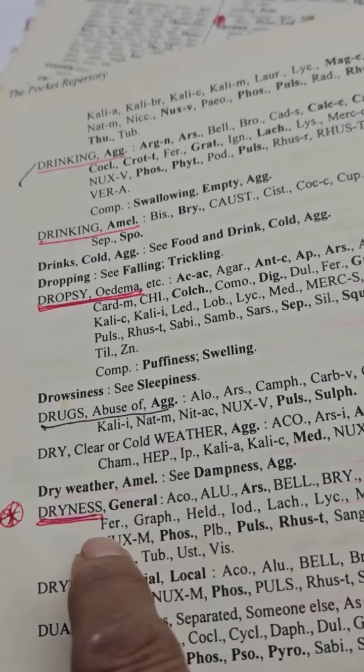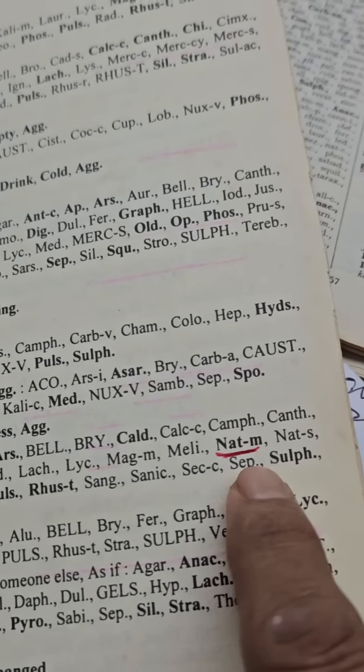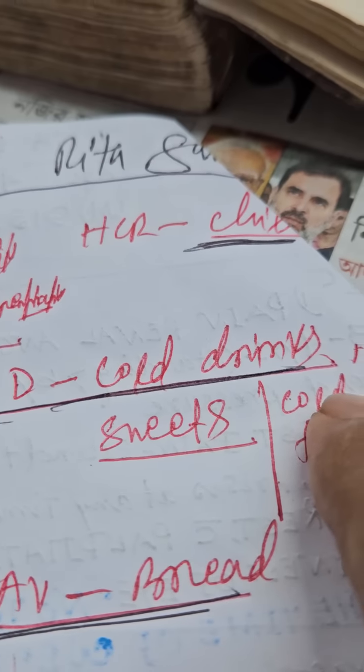In Dr. Shankaran's repertory, dryness in general — Natrum Mur is in the first grade. Number three: chilly patient. Natrum Mur, Phosphorus, Calcarea, Belladonna, Lycopodium, Thuja, Nux Vomica, Hypericum, Psorinum, and others. She is a chilly patient but desires cold drinks.